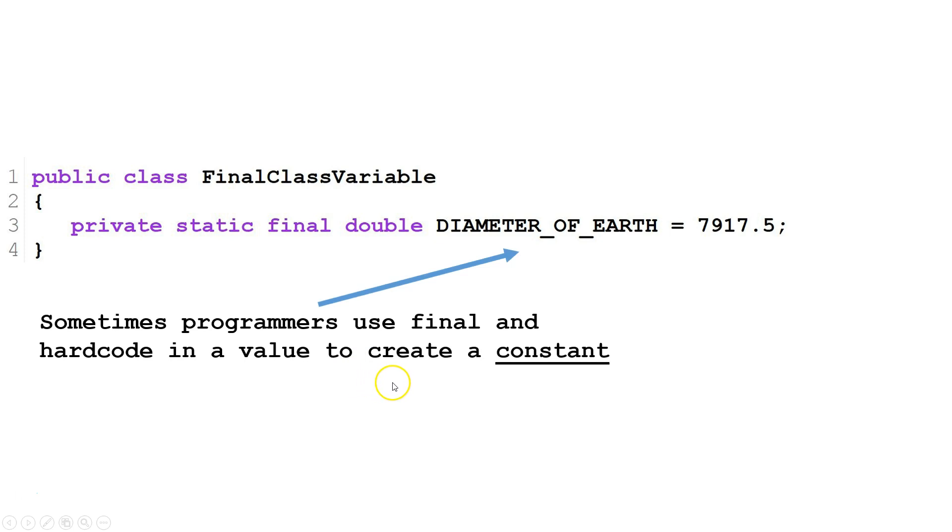Sometimes programmers use final and hardcode in a value to create a constant. Diameter of earth will have the same value throughout the program, the value is definitional of the diameter of earth, and if we want to change the value we're going to have to edit our source code.